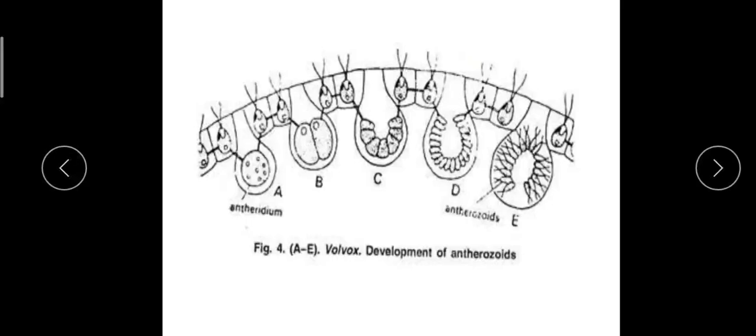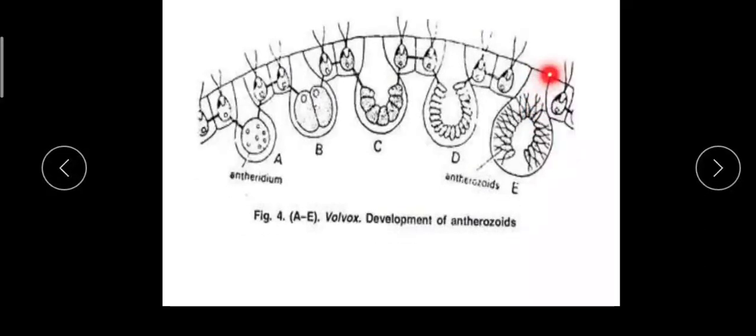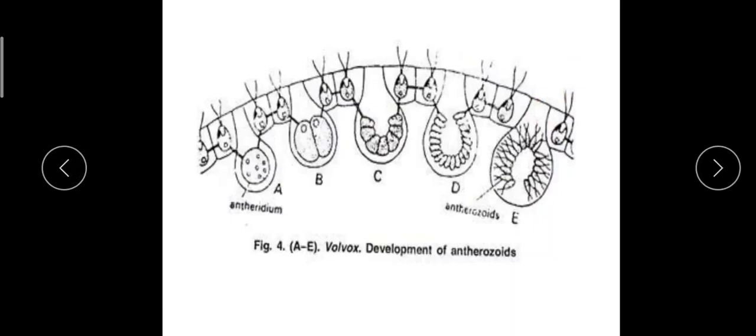The spermatocytes are arranged in the form of a bowl-shaped plate in some species, while in others they may be arranged as a hollow sphere. The sphere may have an opening to the outside called a phialopore — the same term used during asexual reproduction. As maturation begins, the plate or sphere of spermatoids may undergo inversion, as in asexual reproduction.